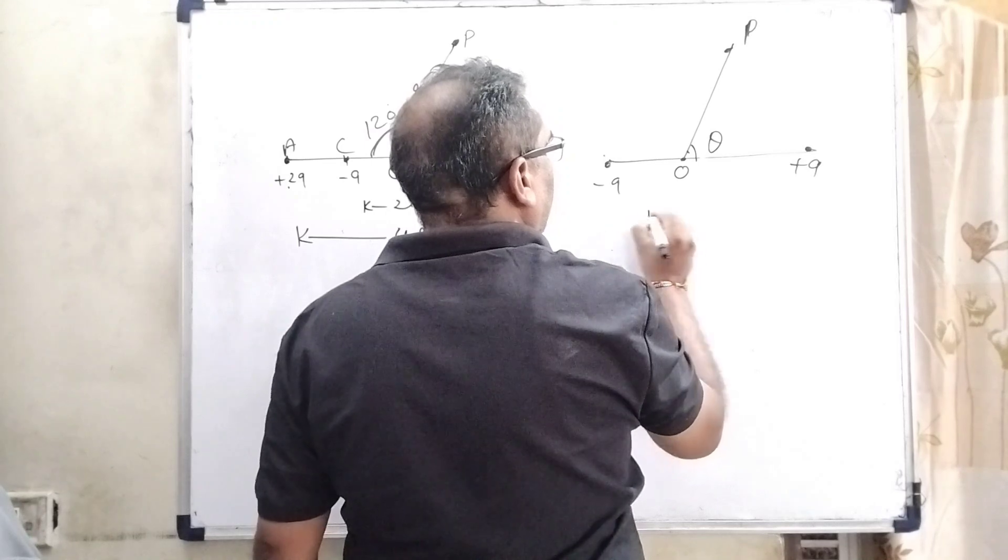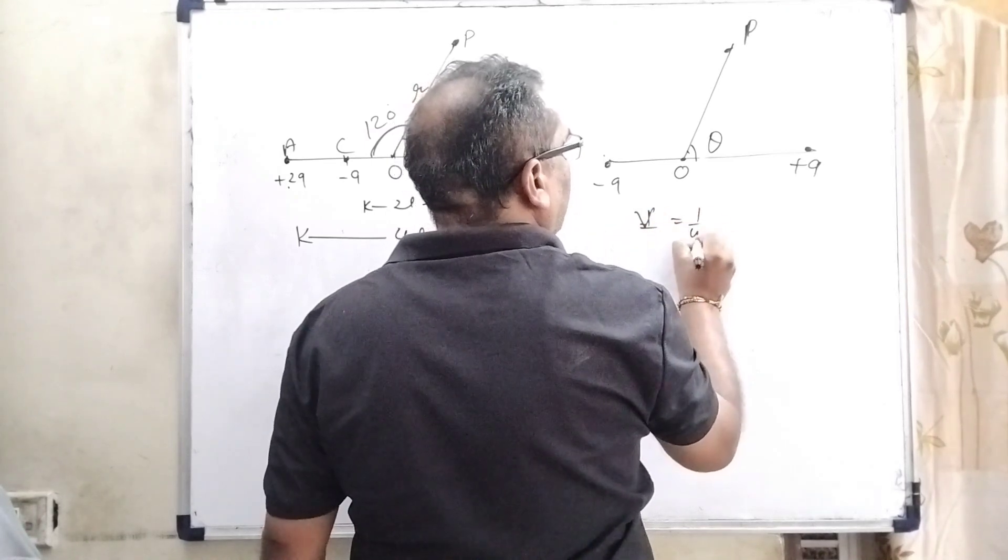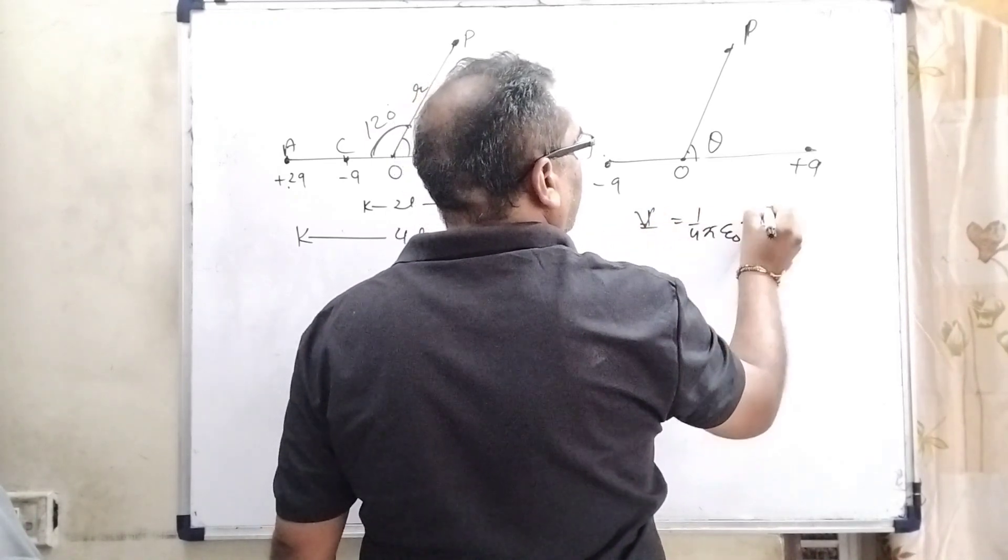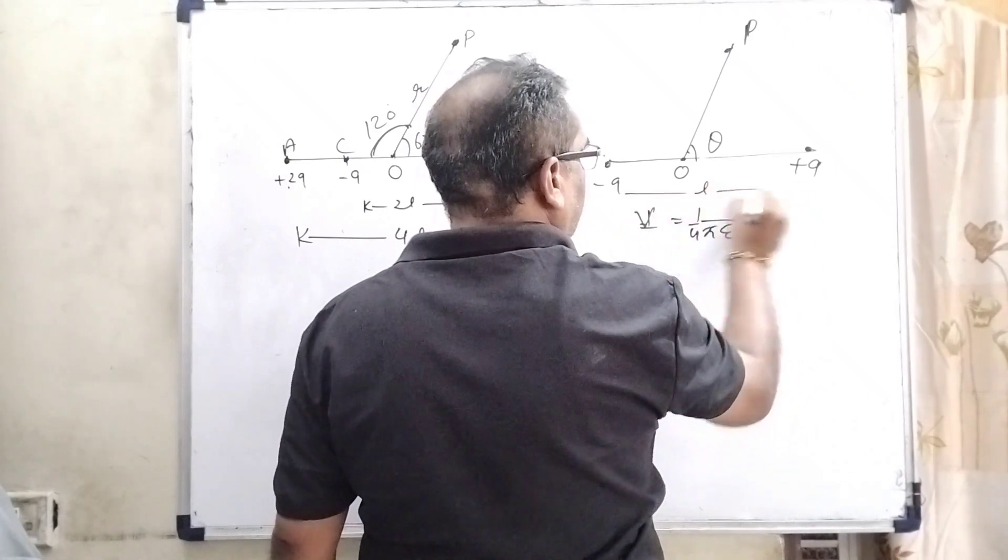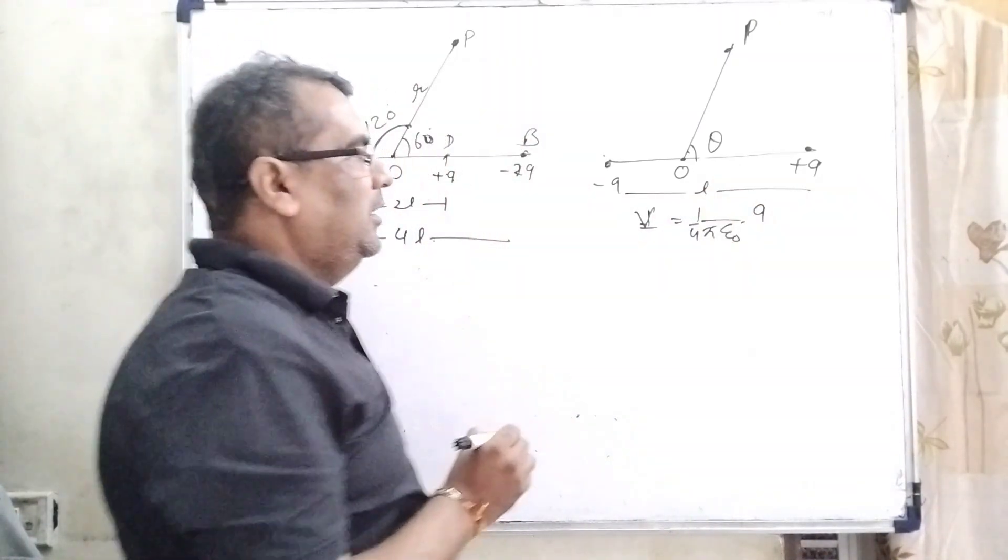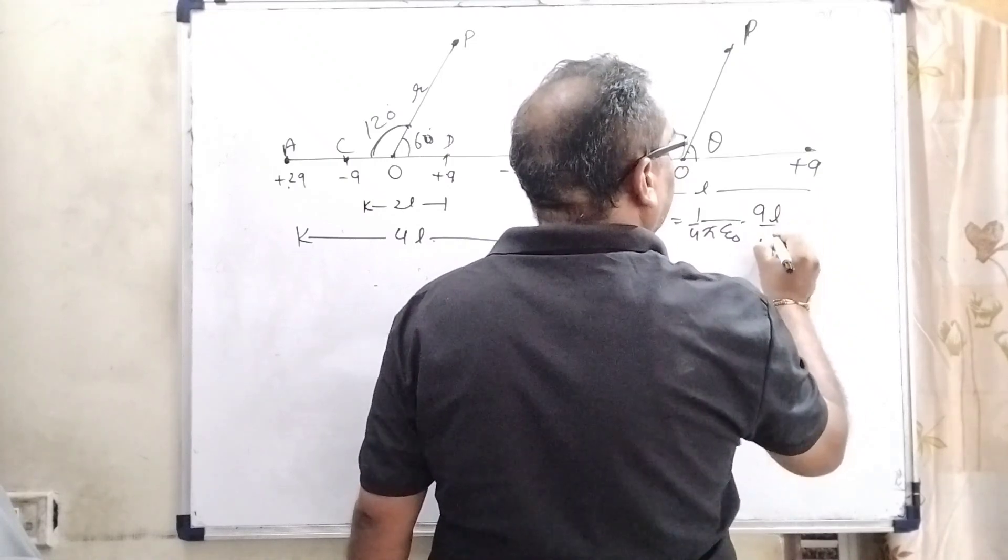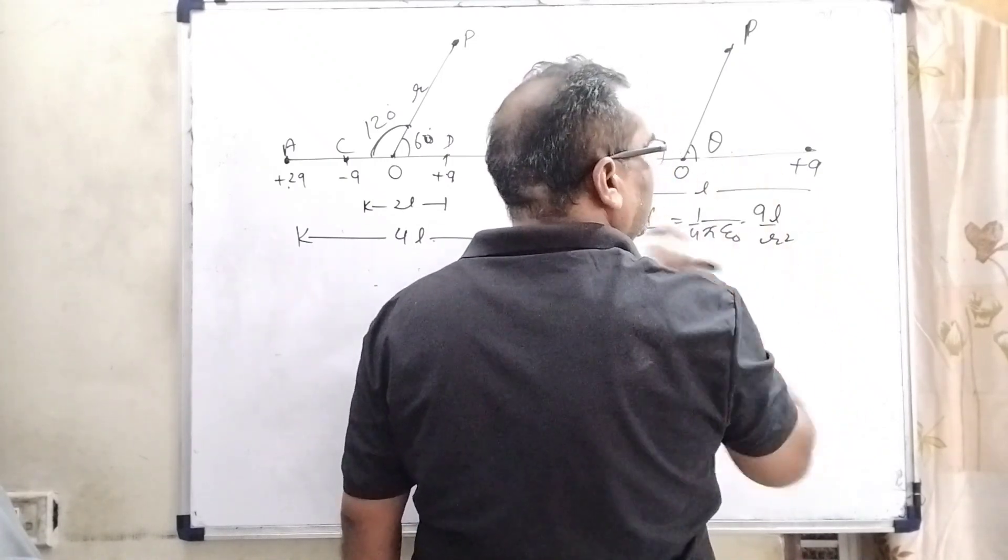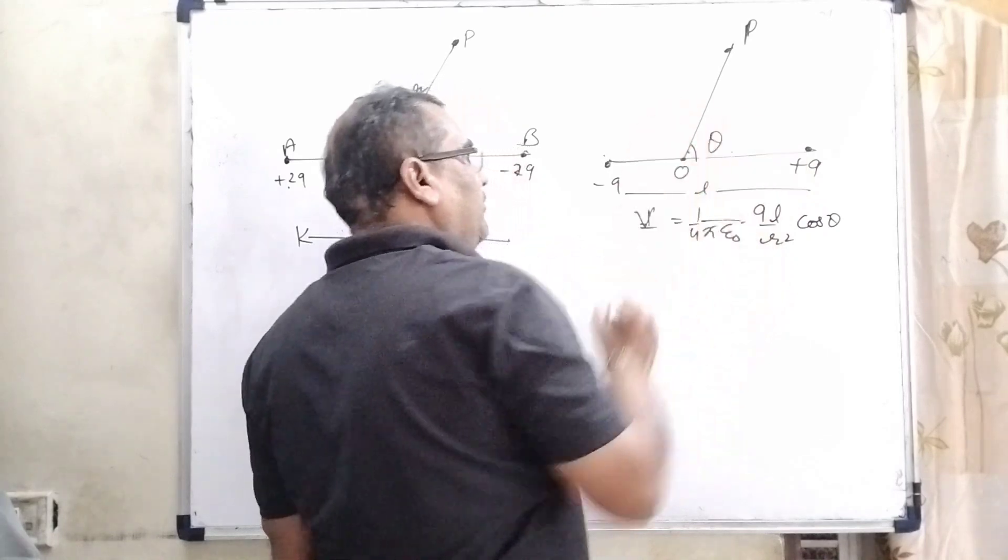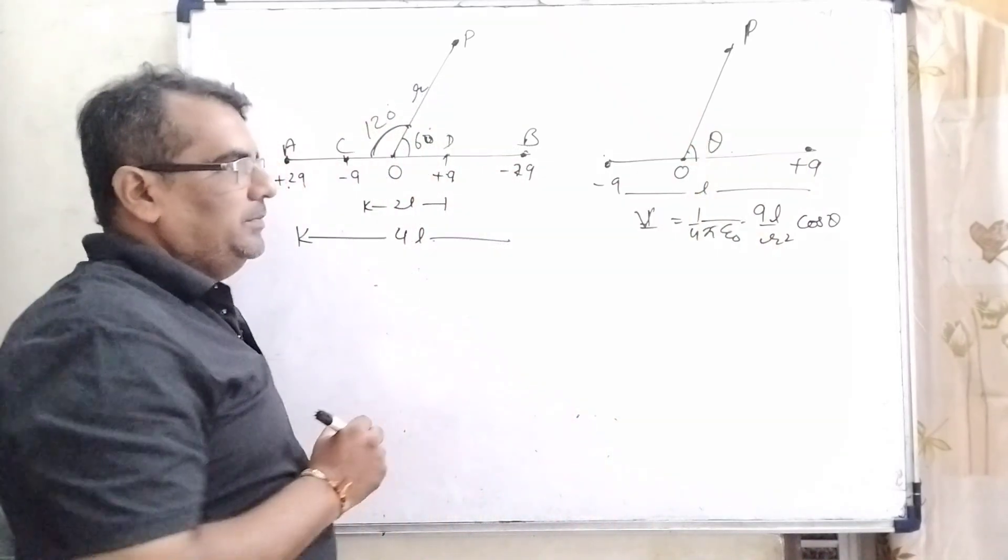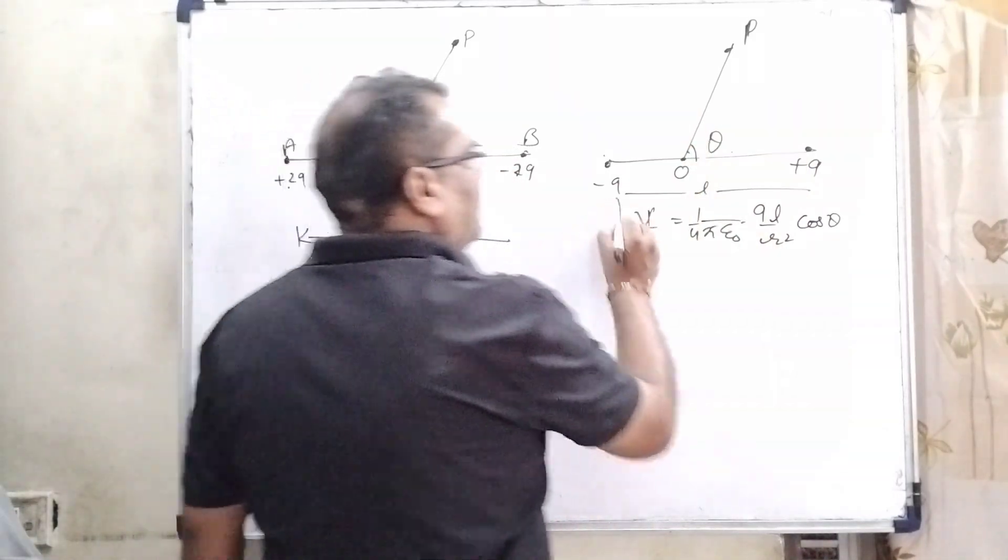So now we are using the formula that is V equals 1 upon 4 pi epsilon 0, here the charge is Q and the distance is L, that is QL by R square and the angle is cos theta. This theta should be taken from positive to that point. This concept we are using.